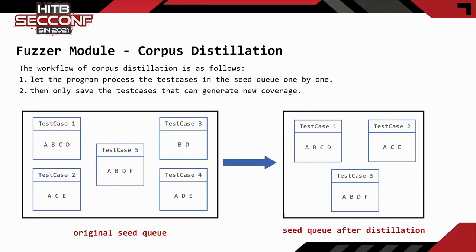The figure below is an example. There are five test cases in the initial seed queue. The basic blocks covered by these five test cases are A, B, C, D, E, F. Test cases 1, 2, and 5 together cover all blocks A through F. Therefore, the final test cases saved in the seed queue after deduplication are test cases 1, 2, and 5.